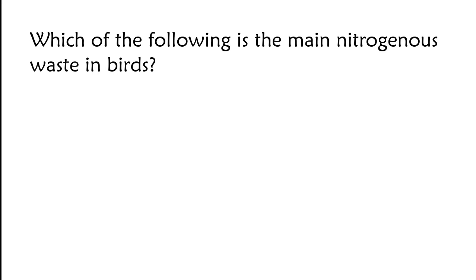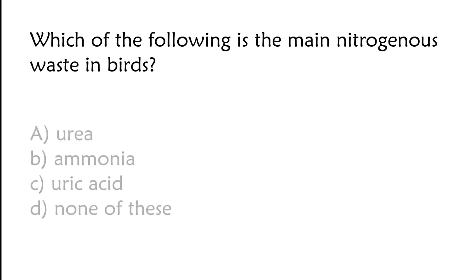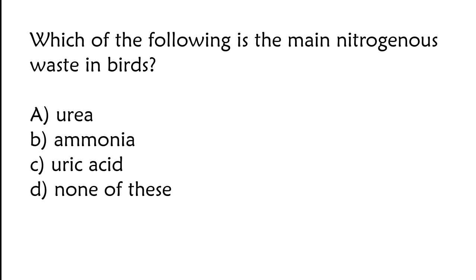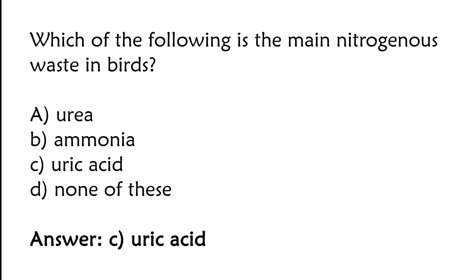Which of the following is the main nitrogenous waste in birds? Urea, ammonia, uric acid, or none of these. The correct answer is option C. Uric acid is the main nitrogenous waste in birds.